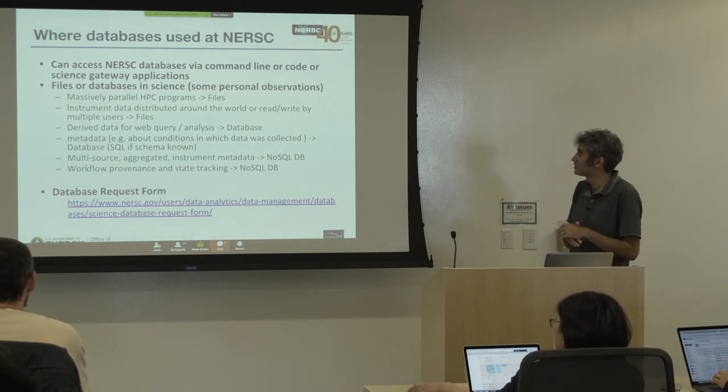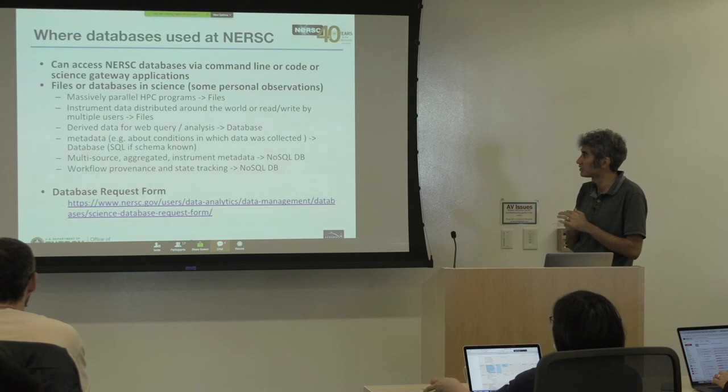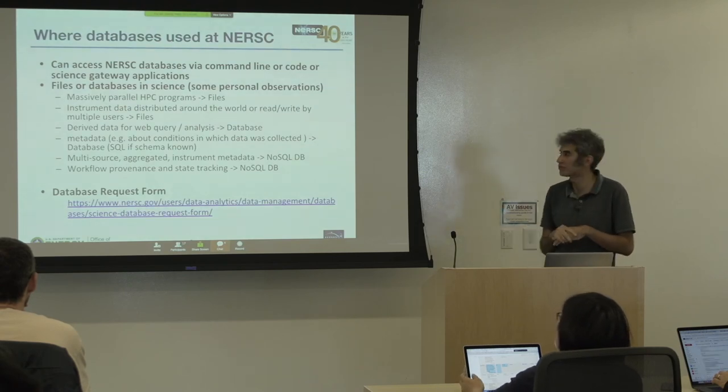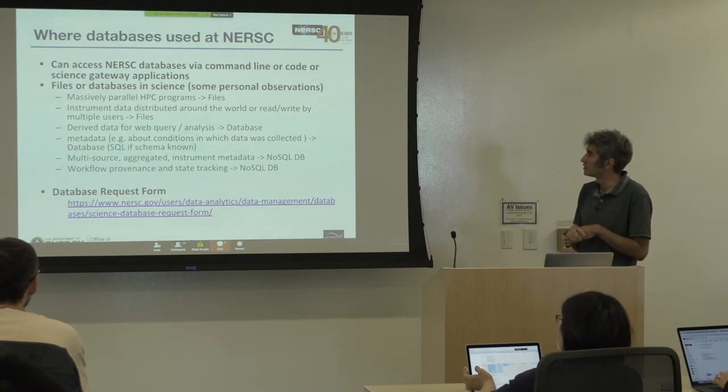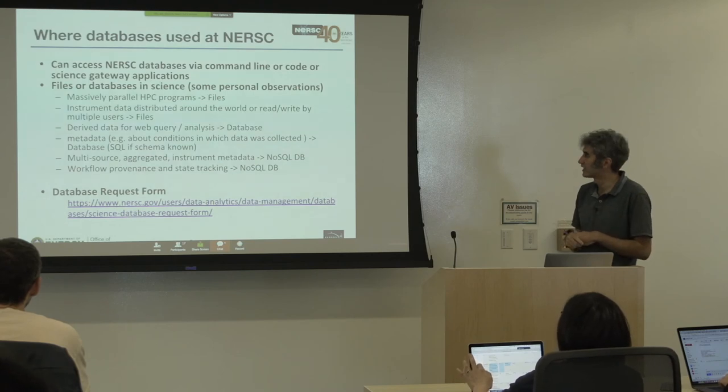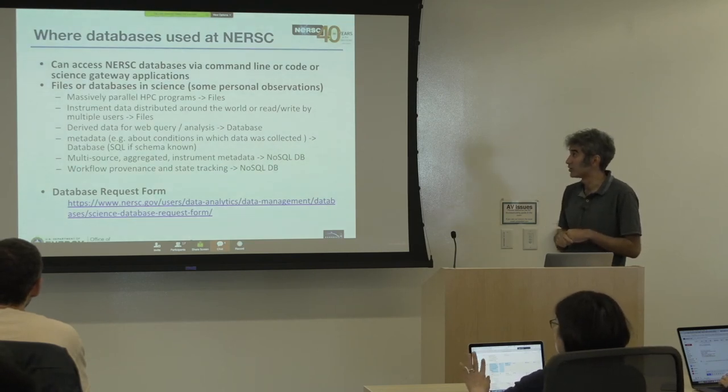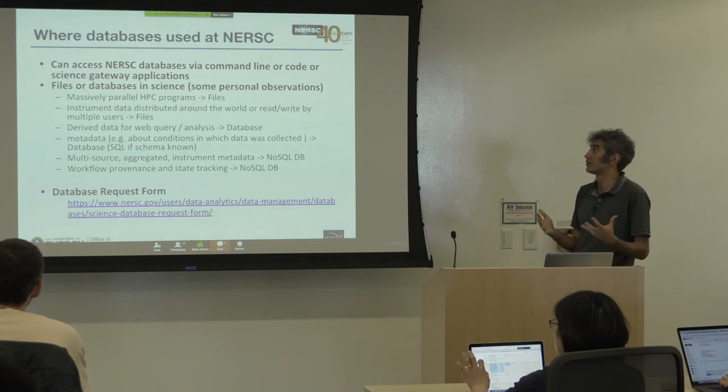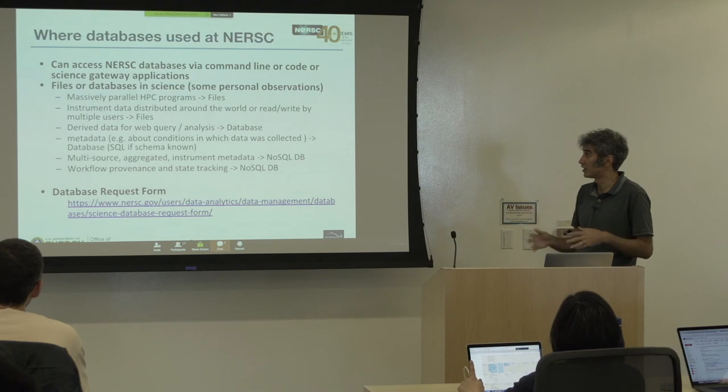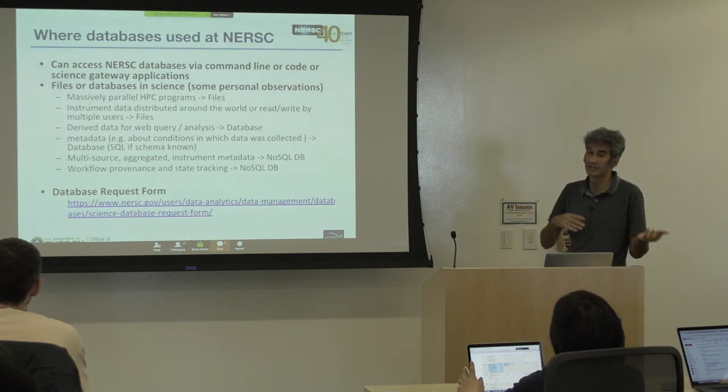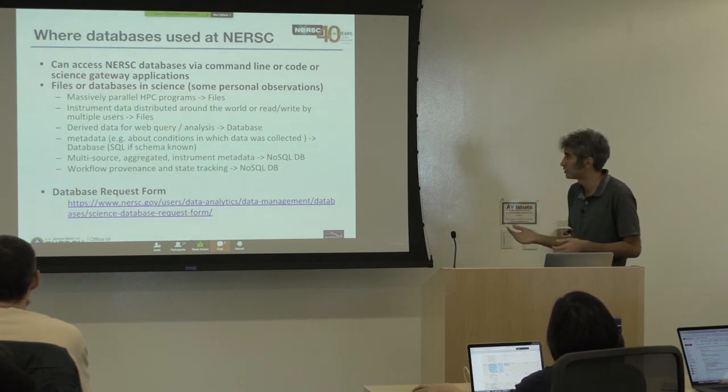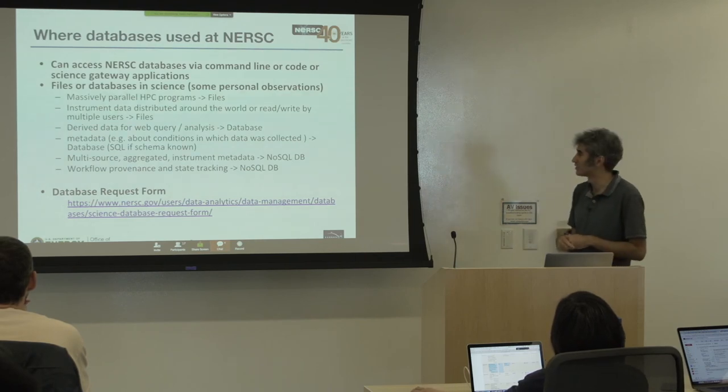Some observations on files versus databases in science: Large, massively parallel HPC programs normally write data to files. This has advantages for large shared collaborations - it's easier to share the data by copying files elsewhere.